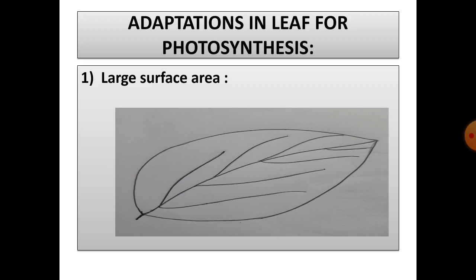Adaptations in leaf for photosynthesis. Leaf adapts themselves to carry the process of photosynthesis. First is a large surface area. Most of the leaves have large surface area so that they can absorb maximum light.